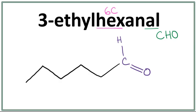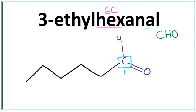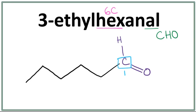Let's number these carbons. Remember that the carbon in the functional group is always the first carbon — then second carbon, third carbon, fourth carbon, fifth carbon, and the sixth carbon.